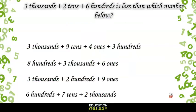This one looks tricky. 3 thousands plus 2 tens plus 6 hundreds is less than which number below? Well, that would be a 3 in the thousands spot, 2 in the tens, 6 in the hundreds, and since there are no ones, a 0 in the ones spot. That gives us 3,620.